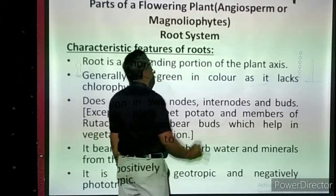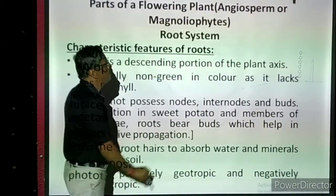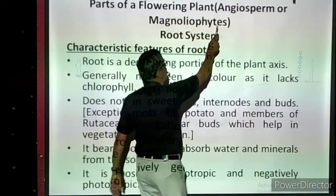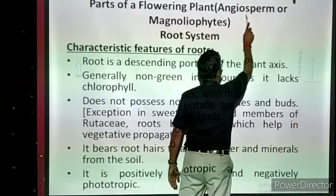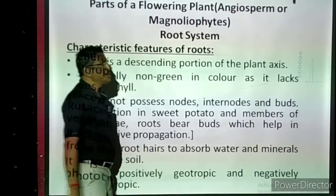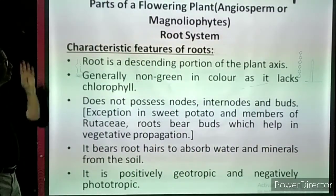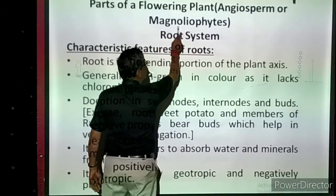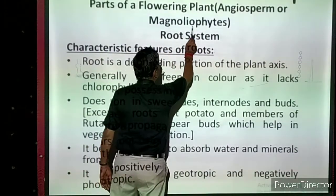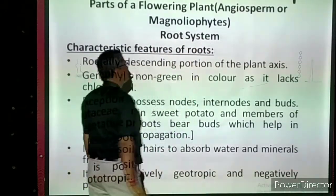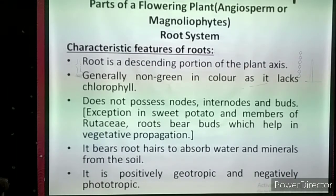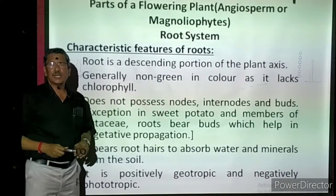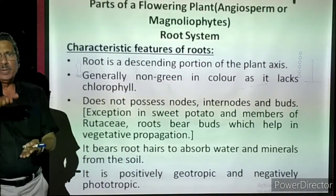Flowering plants are also called angiosperms. Angiosperms are flowering plants. Another name we also use is magnoleophytes. These are the other terms we use for flowering plants.